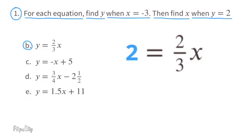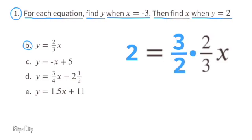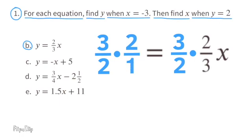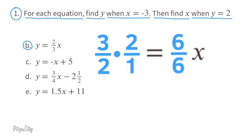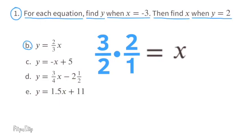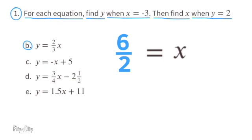To get x by itself, multiply 2 thirds by its reciprocal, which is 3 halves, and multiply 2 times 3 halves as well. 3 halves times 2 over 1 gives 6 over 2, which equals 3. On the left side, 3 halves times 2 thirds gives 6 over 6, which equals 1, so x equals 3 when y equals 2.